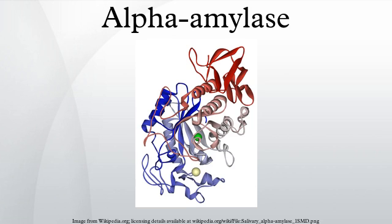Alpha-amylase is a protein enzyme (EC 3.2.1.1) that hydrolyzes alpha bonds of large, alpha-linked polysaccharides, such as starch and glycogen, yielding glucose and maltose. It is the major form of amylase found in humans and other mammals.